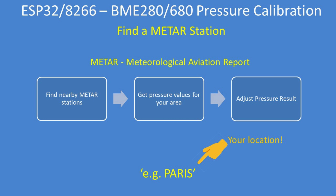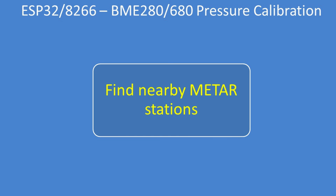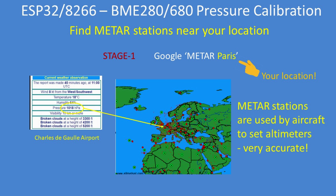METAR stations are very accurate and they're used by aircraft to set altitude level. Find a METAR station and get a pressure value for your area to adjust your result. For example, Googling 'METAR Paris' gives a result showing the current air pressure at that airfield is 1018 hectopascal. The red dots denote other METAR stations — there are literally thousands around the world, so very accurate.